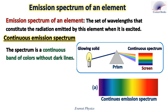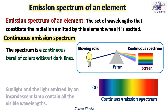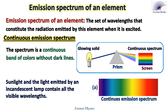When heated, gases under high pressure, solids, and liquids have a continuous spectrum of light. Also, sunlight and light emitted by an incandescent lamp contain all the visible wavelengths.